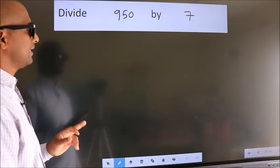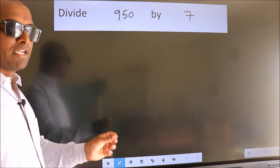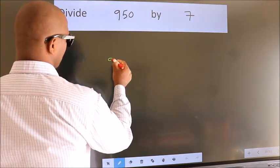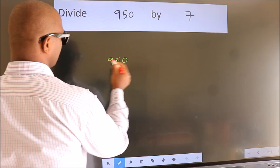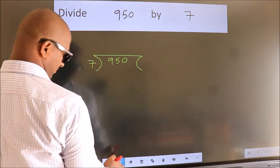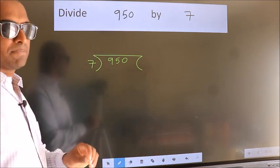Divide 950 by 7. To do this division, we should frame it in this way. 950 here, 7 here. This is your step 1.